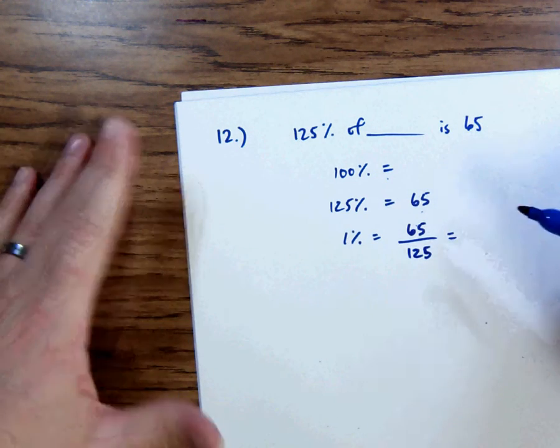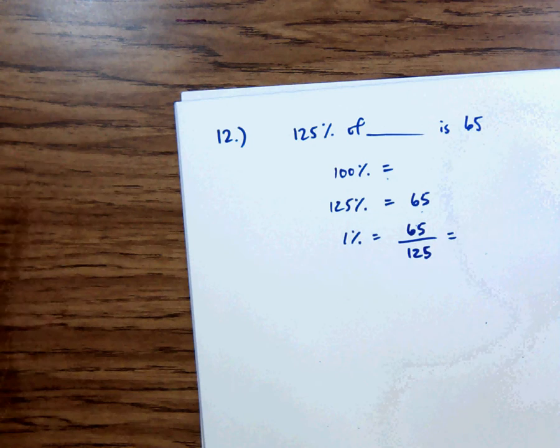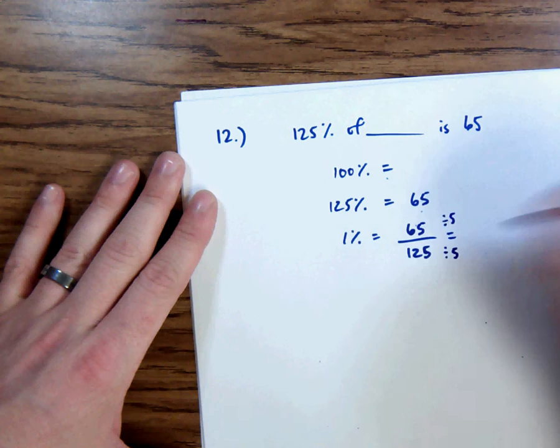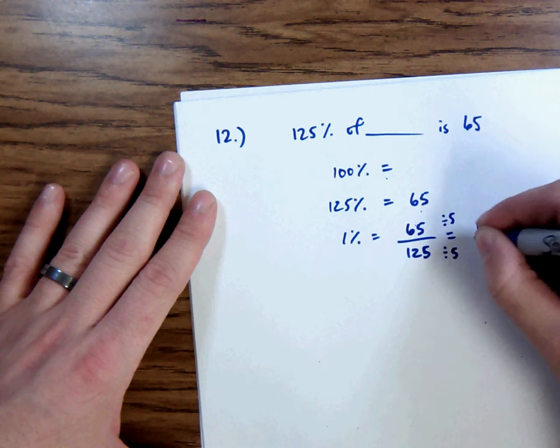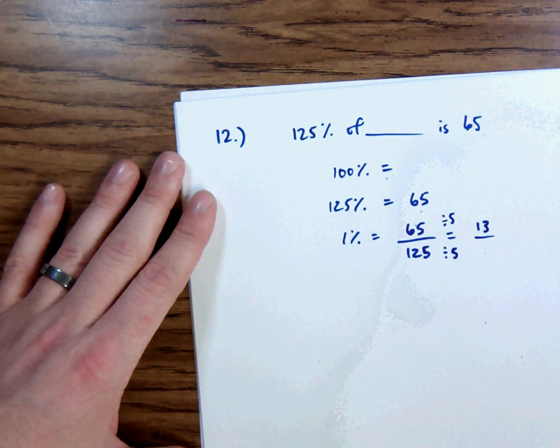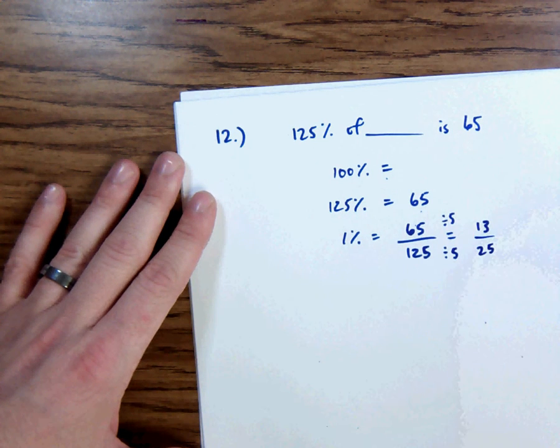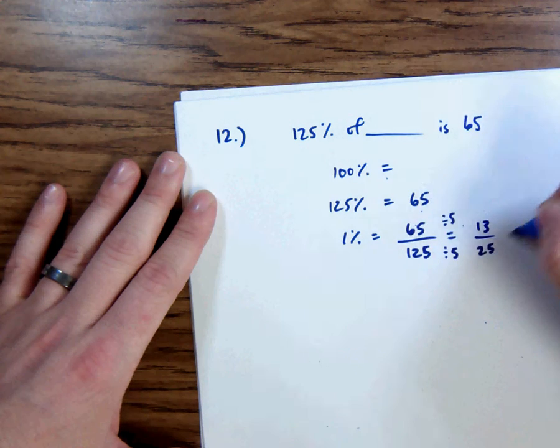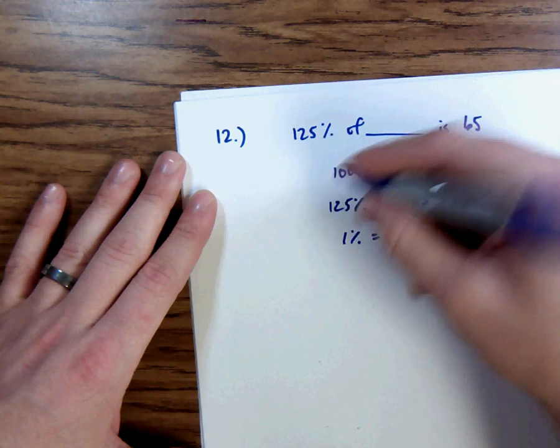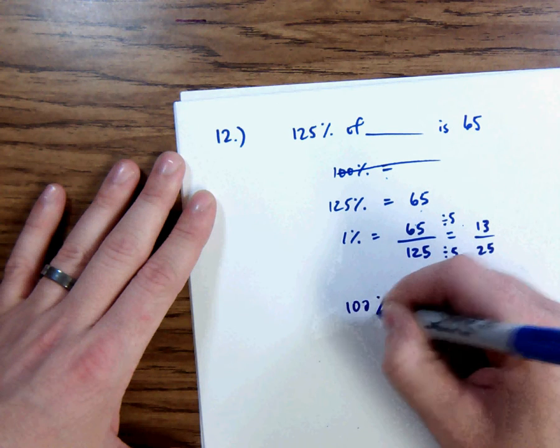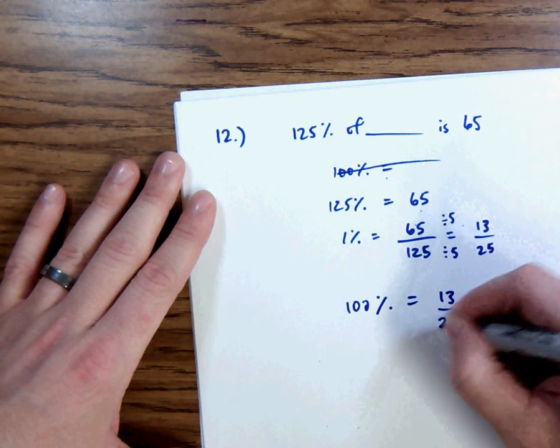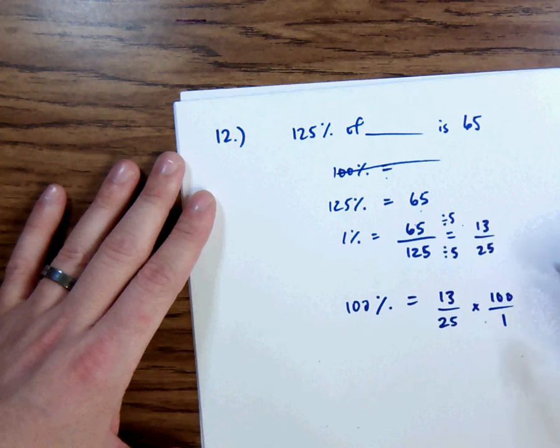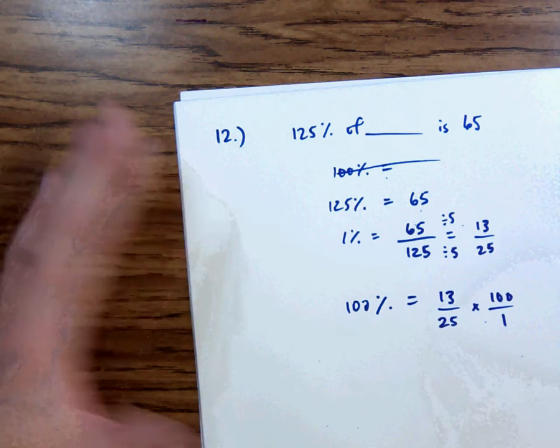I'm going to say, well, 65 and 125, they're both divisible by 5. So I'm going to divide this and this both by 5. 65 divided by 5 is 13. And 125 divided by 5 is 25. And now this number, that doesn't reduce. So I'm going to leave that. So this is 1% right here. So I'm going to use that 100%. And it's kind of jumbled up there. 100% is equal to 13 over 25 times 100 over 1. Because remember 1% was this. To find 100%, we'd multiply them both by 100.